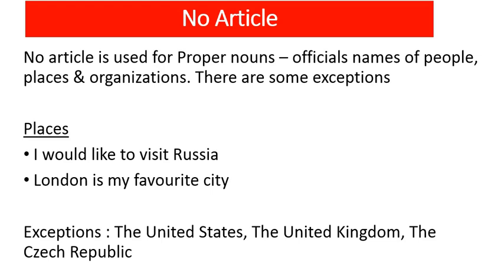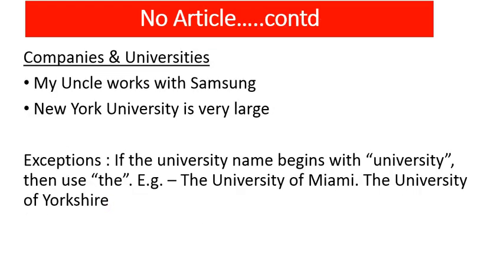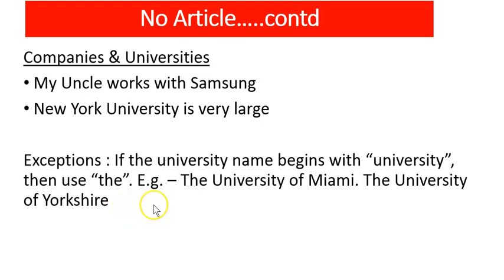There are certain words where you don't use any articles. No article is used for proper nouns — official names of people, places and organizations. For example, 'I would like to visit Russia' — not 'the Russia.' 'London is my favorite city' — not 'the London is my favorite city.' However, there are some exceptions: The United States, The United Kingdom, The Czech Republic — these are exceptions because their name itself begins with 'the.' For companies and universities: 'My uncle works with Samsung,' not 'the Samsung.' 'New York University is very large,' not 'the New York University.' But if a university name begins with 'University of,' you use 'the' — for example, The University of Miami, The University of Yorkshire.